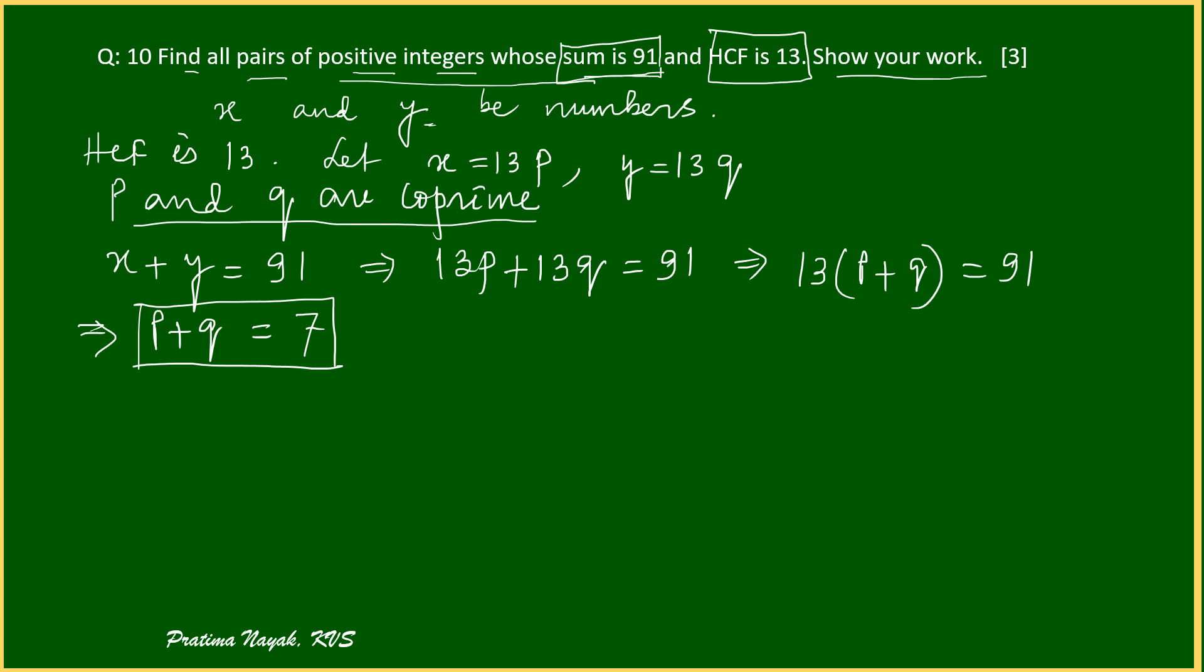So P plus Q is equal to 7 and P and Q are coprime. So what can be the value of P and what can be the value of Q? They are coprime, they have no common factor and their sum is 7.